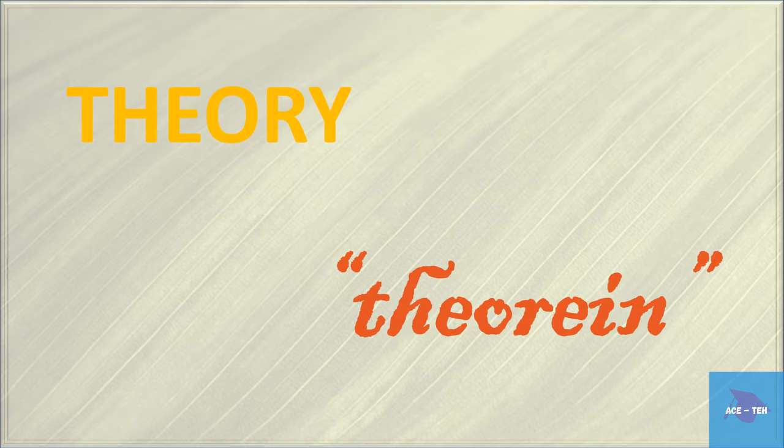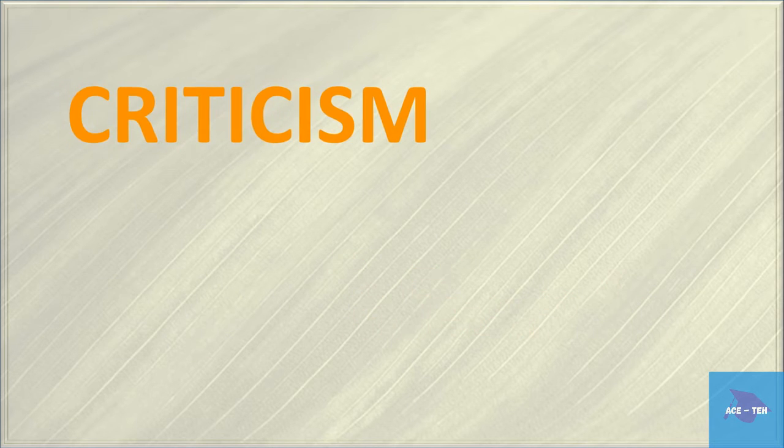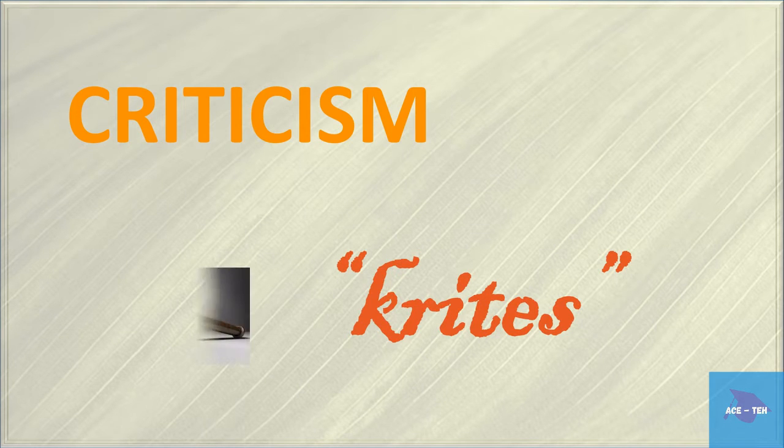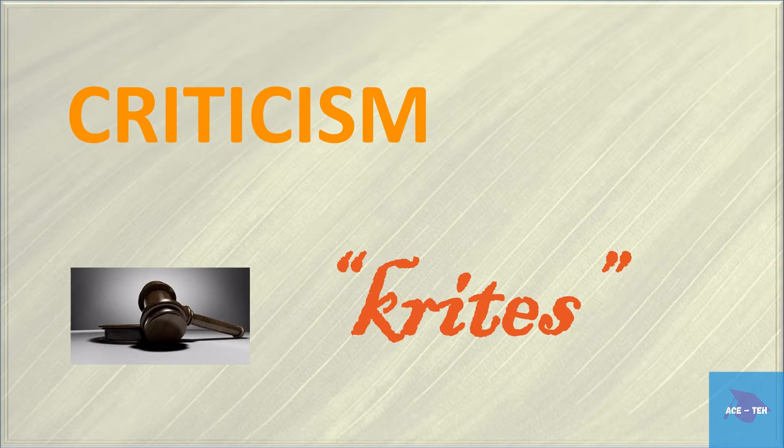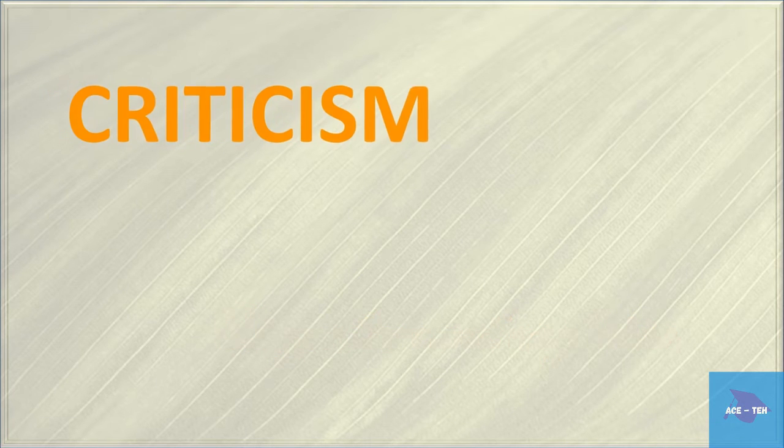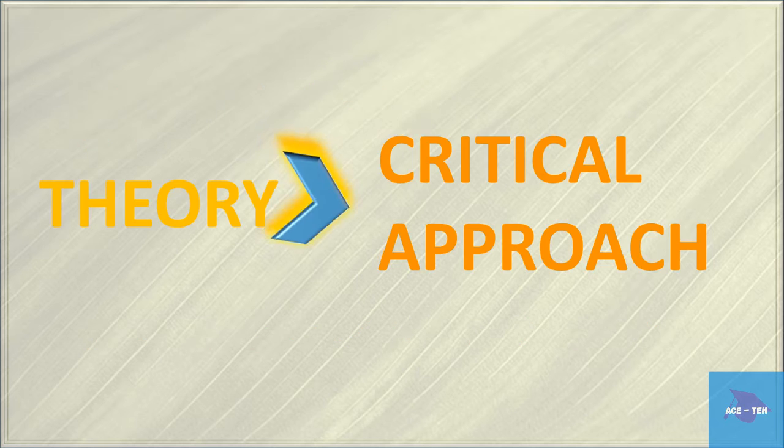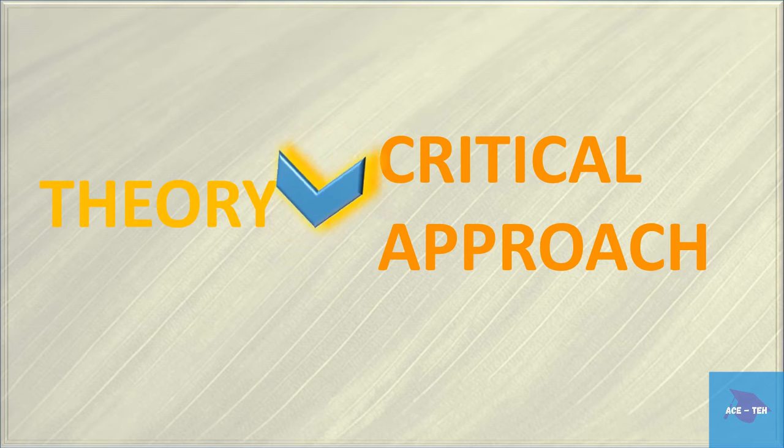The word theory came from the Greek word theorien meaning to look at. It was frequently used in terms of looking at a theater stage. The word criticism comes from the Greek word kritis meaning judge. Theory organizes and explains whereas criticism does the analysis, interpretation and evaluation. Theories lead to critical approaches and critical approaches are needed to create new theories.